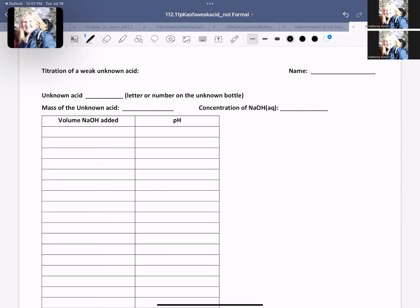And you've collected all of this data. So with this, what are we going to do? Well, you have your letter or your number of your unknown. You have the mass that you weighed out and the concentration of your particular bottle of sodium hydroxide.